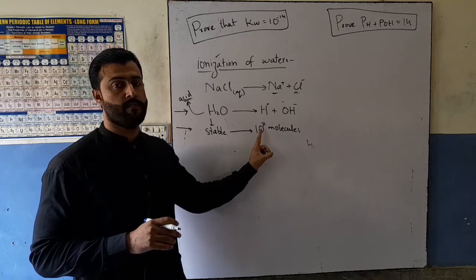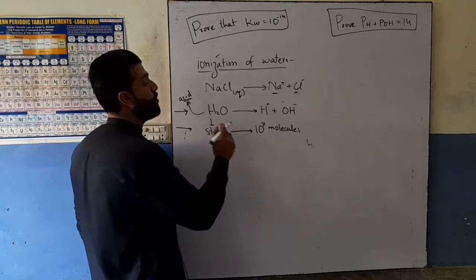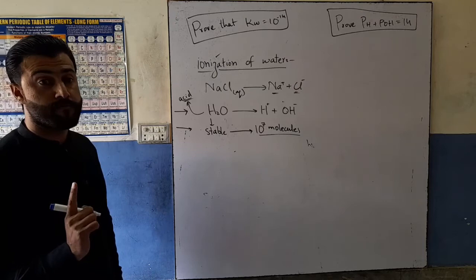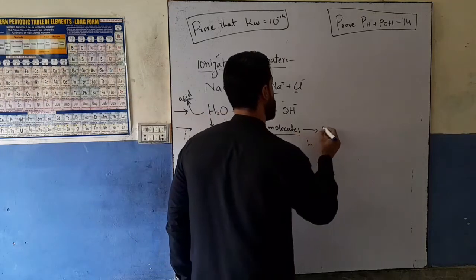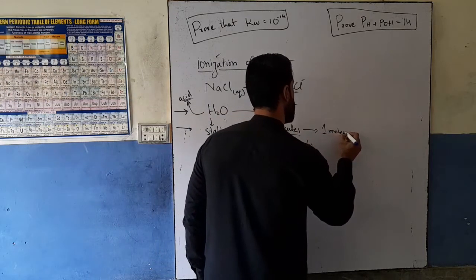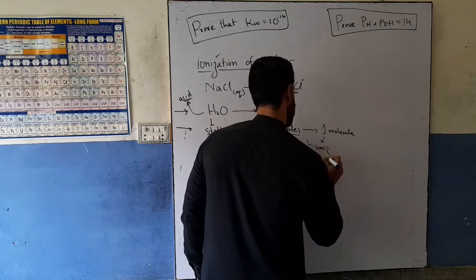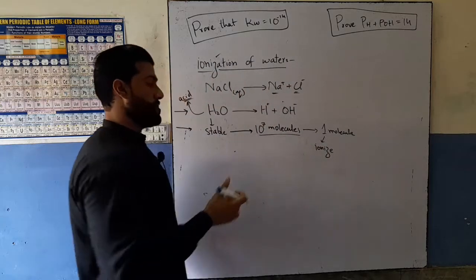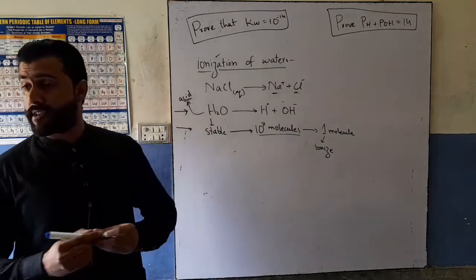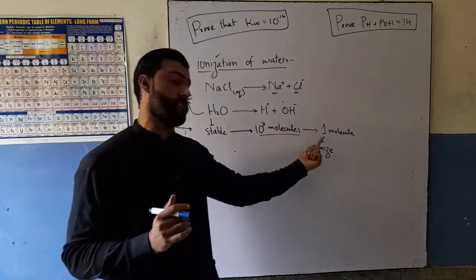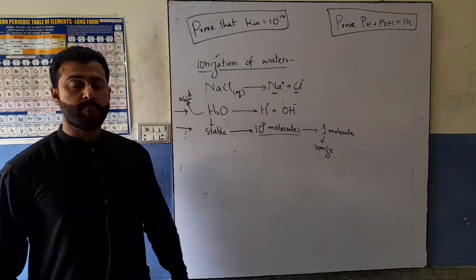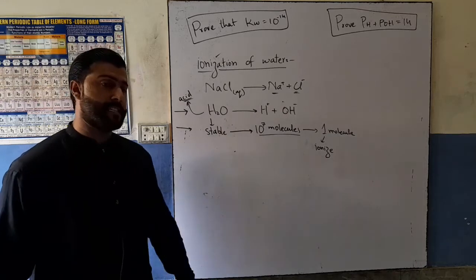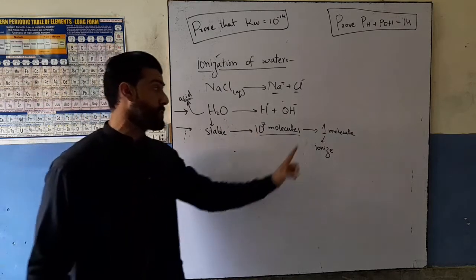Out of one crore (10 to the power 7) molecules, only one molecule undergoes ionization. Just one — that is all. Because water is so stable, only one out of 10 to the power 7 molecules ionizes.